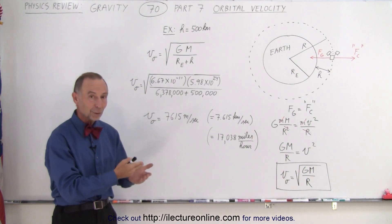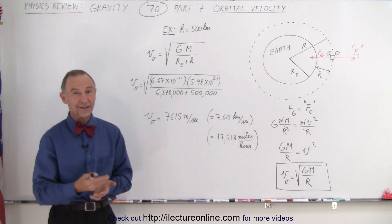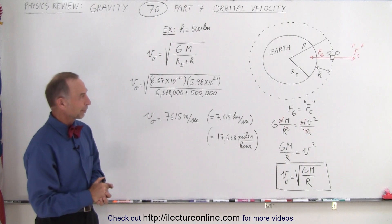And that is how we calculate orbital velocity in any situation. In this case, the example is simply a satellite in orbit around the Earth.